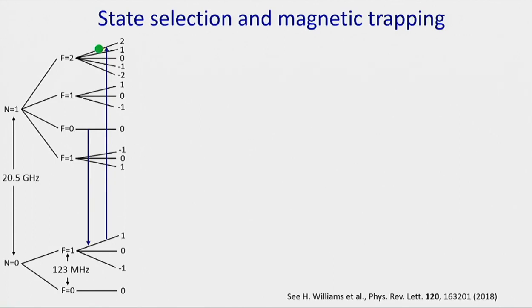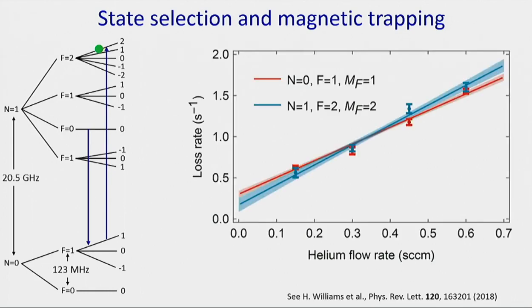We typically transfer population back up to N equals 1, often choosing the state F equals 2, MF equals 2. These are weak-field-seeking states, so they are magnetically trappable. We turn on a magnetic quadrupole trap to confine the molecules. We measured the loss rate from the magnetic trap as a function of helium flow from the cryogenic source, finding it depends linearly on the helium flow rate. We did this with molecules in two different quantum states as a proof-of-principle demonstration that we could perform collision experiments with molecules in single selectable quantum states.